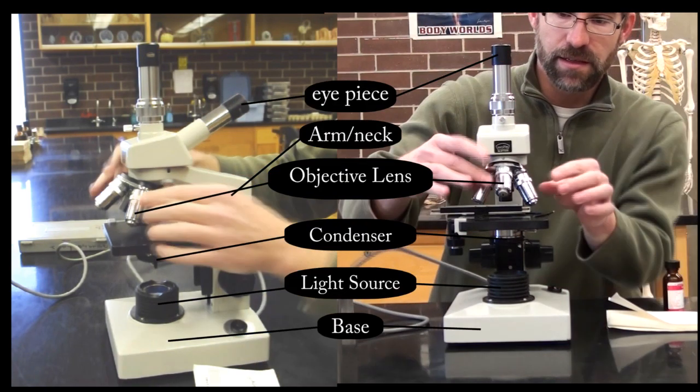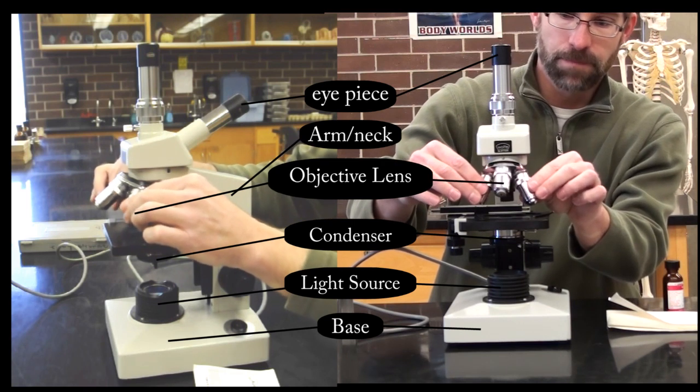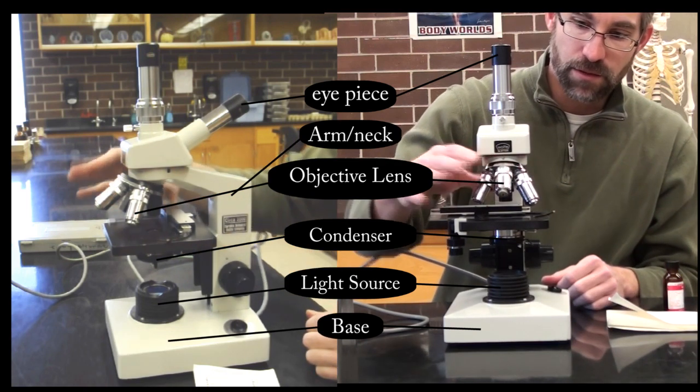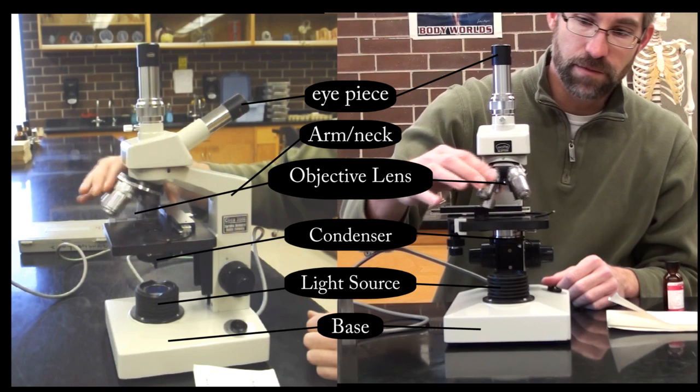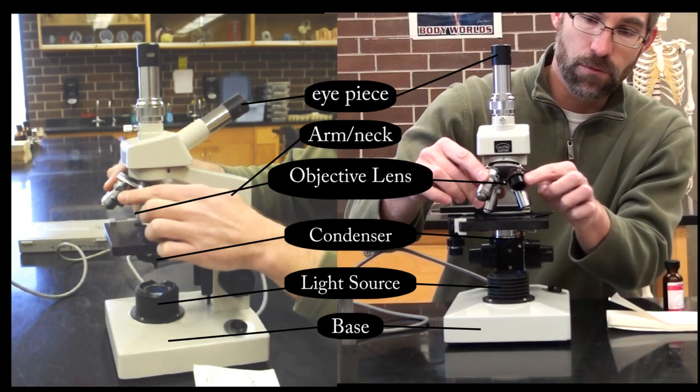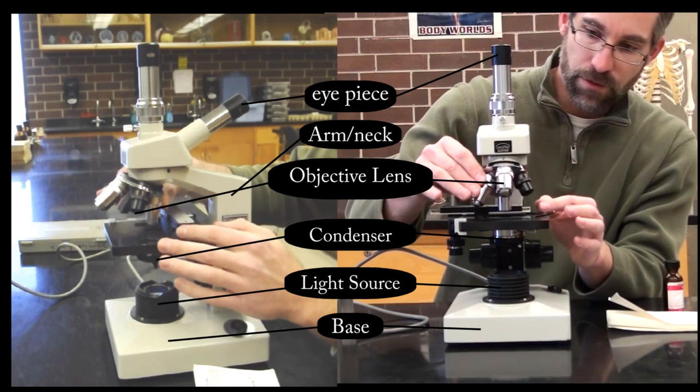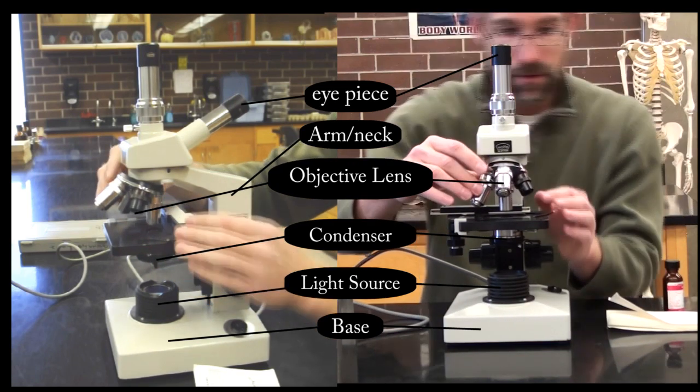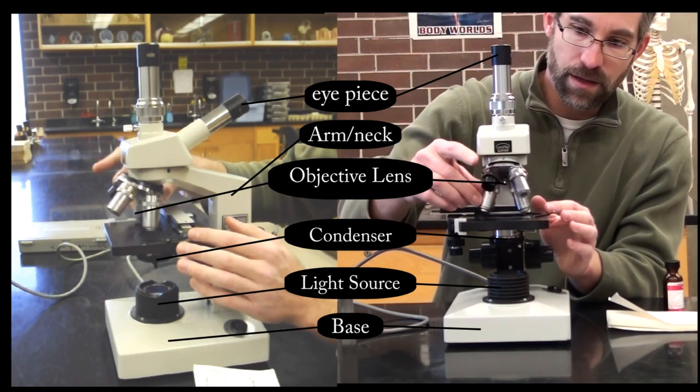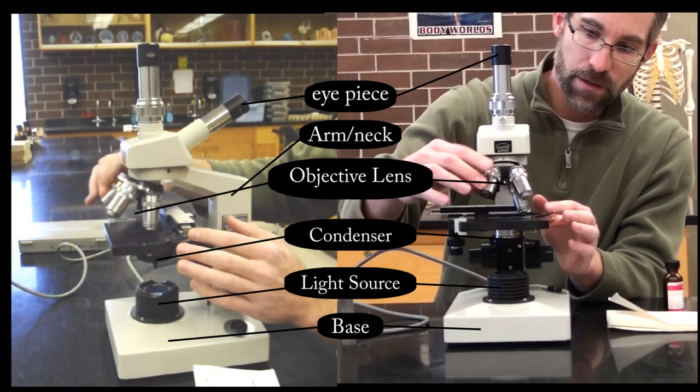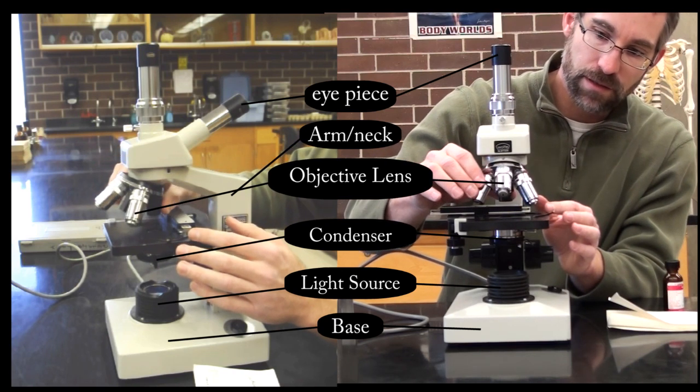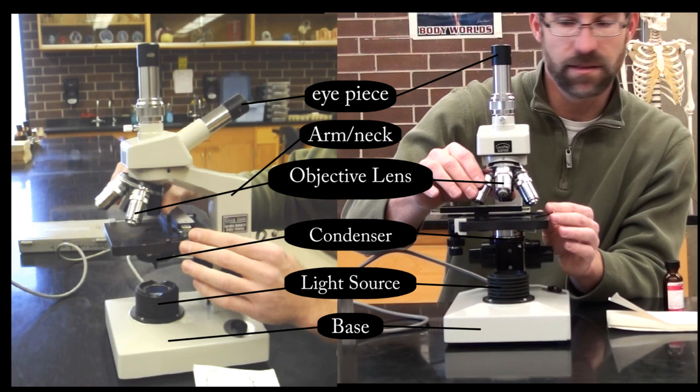In terms of lenses, these are our objective lenses. Best practice is to always start on the smallest objective, which is this one right here. This is 4 power. And then as we rotate through, we will have a total of four different objectives. We can rotate the headpiece and there's a small click that should occur to make sure the lens is in appropriately.